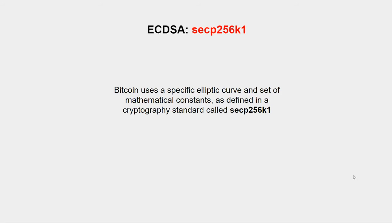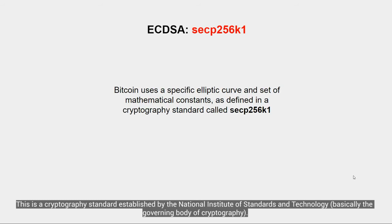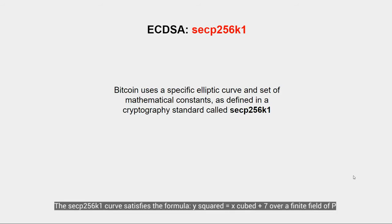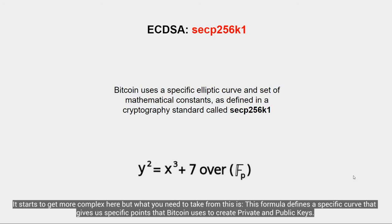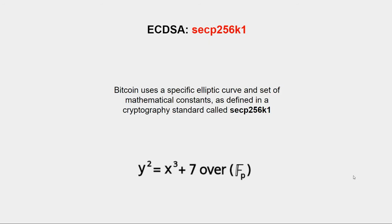Bitcoin uses a specific elliptic curve and set of mathematical constraints as defined in a standard called secp256k1. This is a cryptography standard established by the National Institute of Standards and Technology — basically the governing body of cryptography. The secp256k1 curve satisfies the formula y² = x³ + 7 over a finite field of p, and it produces a very specific elliptic curve. This formula defines the curve and possible points used as values for Bitcoin's private and public keys.